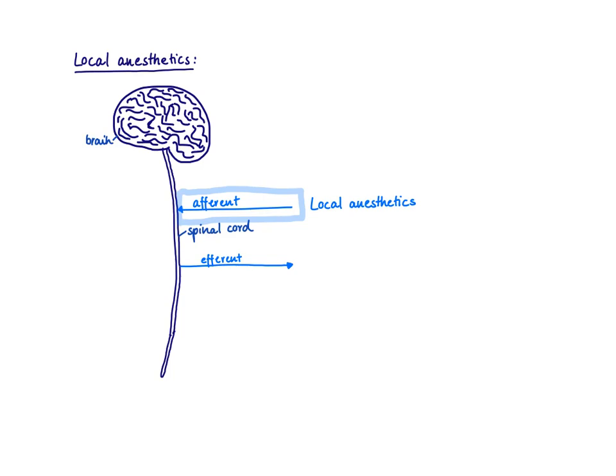In this video I want to talk about the mechanism of action of local anesthetics. What do local anesthetics do? They block locally neurons, they numb neurons. They work mainly on afferent neurons so that you prevent a pain signal from getting to the central nervous system and that you feel pain.